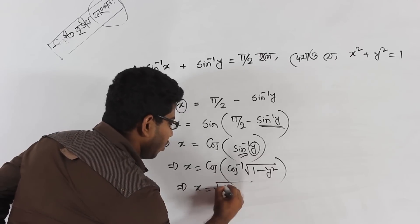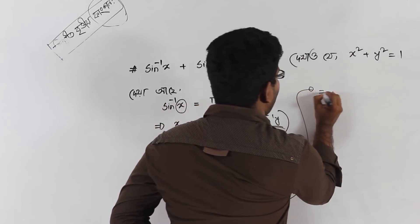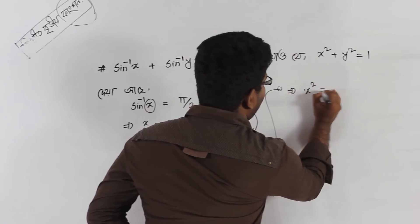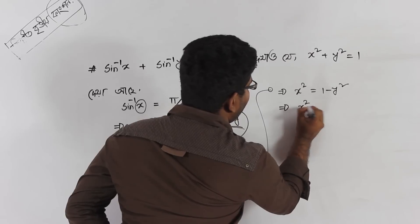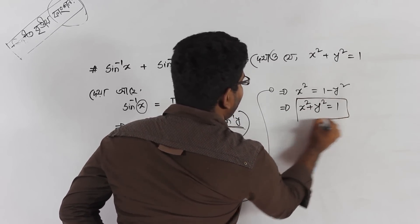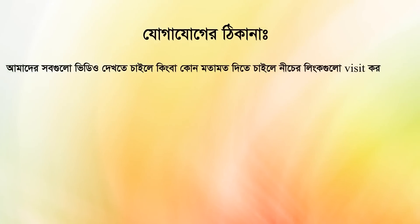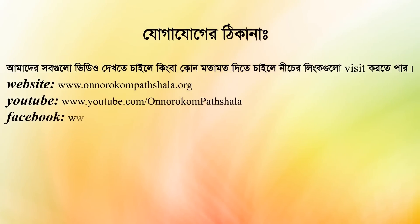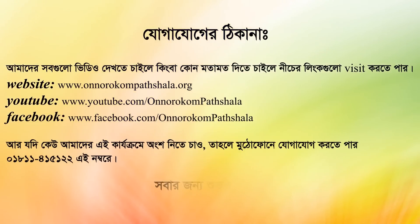So x equals cos of sin inverse y. Now converting sin inverse to cos inverse: it becomes root over (1 minus y squared), as the cos inverse cancels out. So x equals root over (1 minus y squared). Squaring both sides: x squared equals 1 minus y squared, which gives x squared plus y squared equal to 1. That is what we needed to prove.